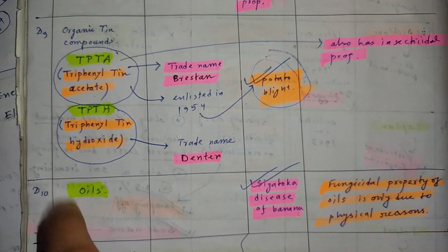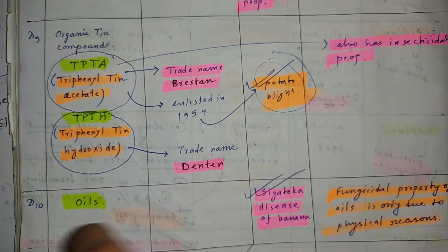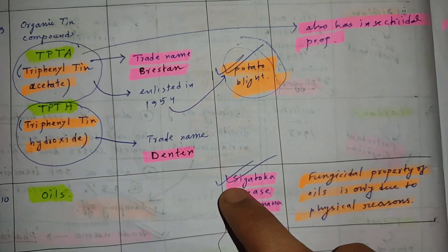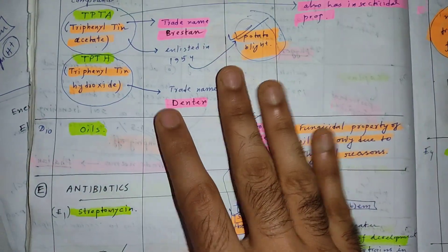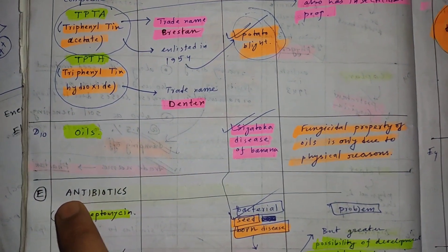Another component of organic fungicides: oils can also be used. Generally, oils are used in controlling sigatoka disease of banana. That's it for today. In the next video, we are going to talk about antibiotics.